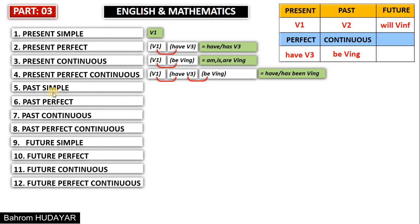Now let's look at some more difficult tenses — the past tenses. The past simple: what is the main formula of past simple? You can check from the table — it is verb two. That is the main formula of past simple. What about past perfect? This tense might be difficult for many of you, but thanks to this multiplication process it is not difficult to solve the structure of this tense.